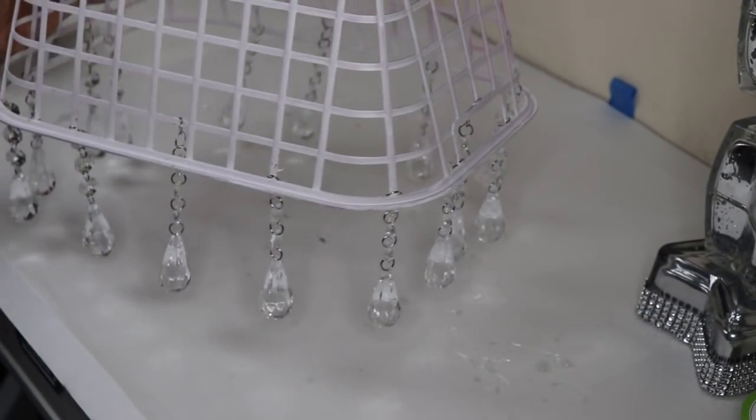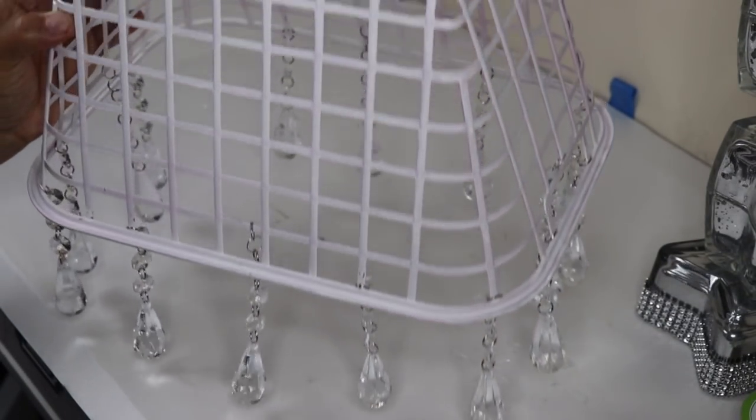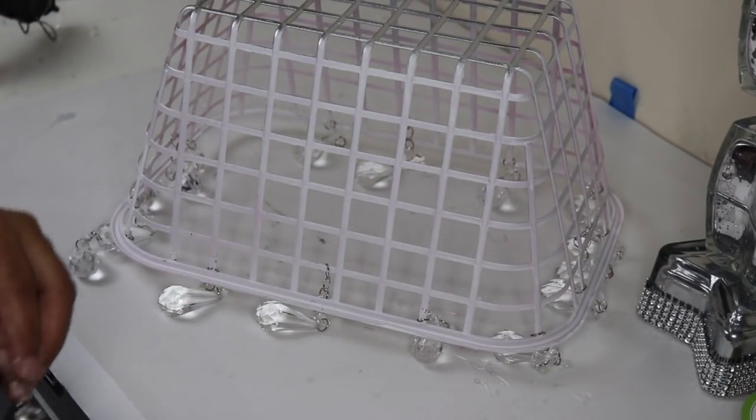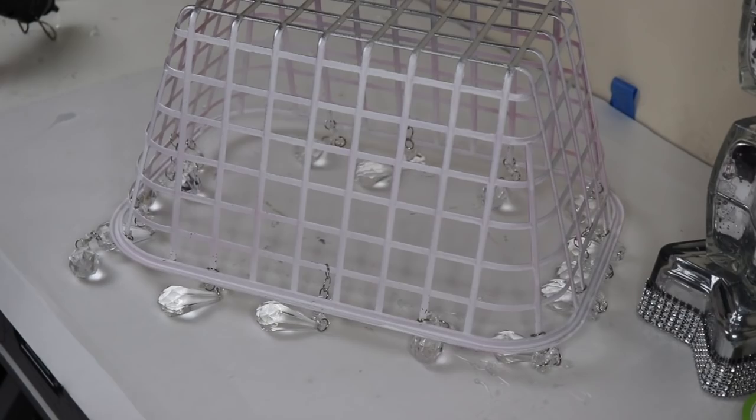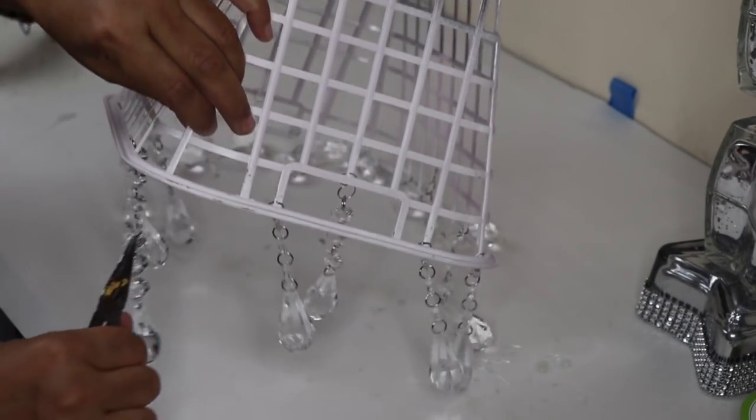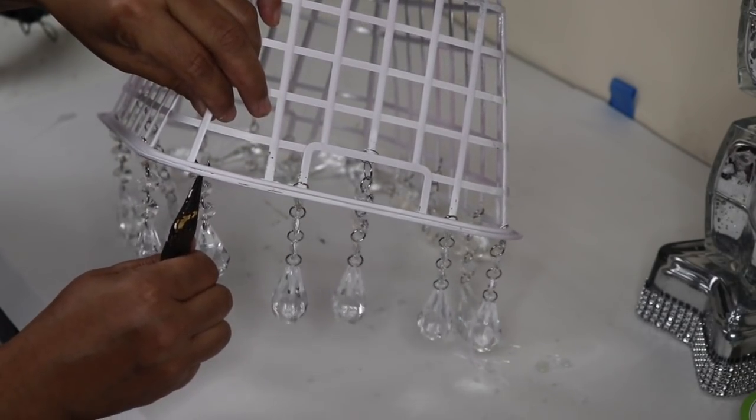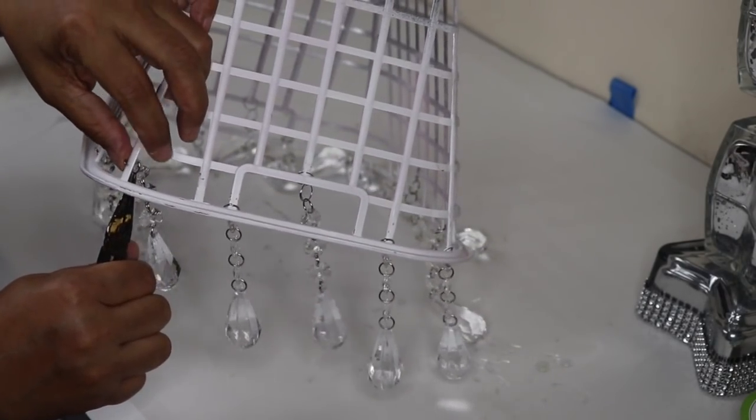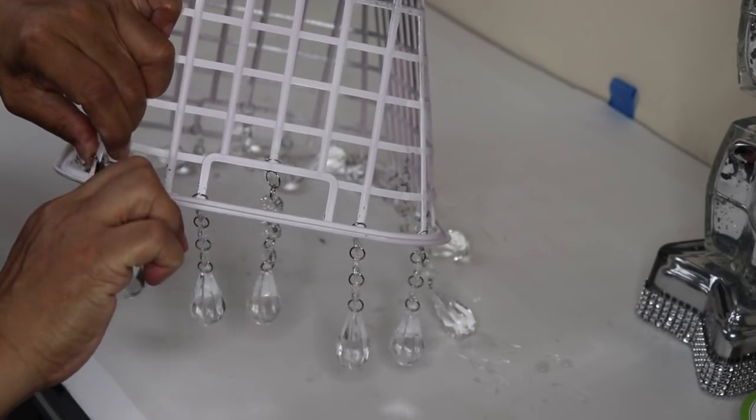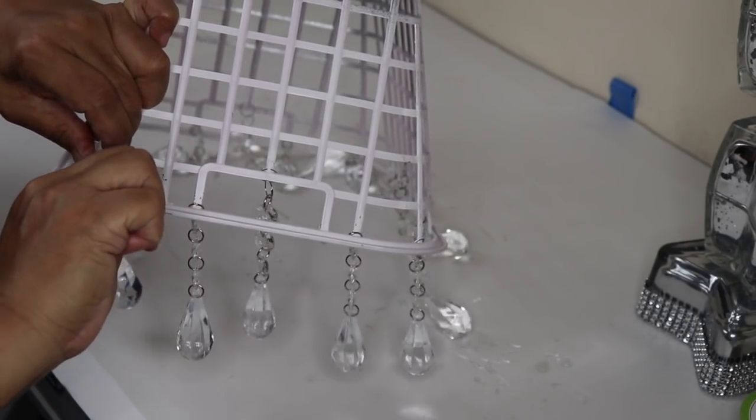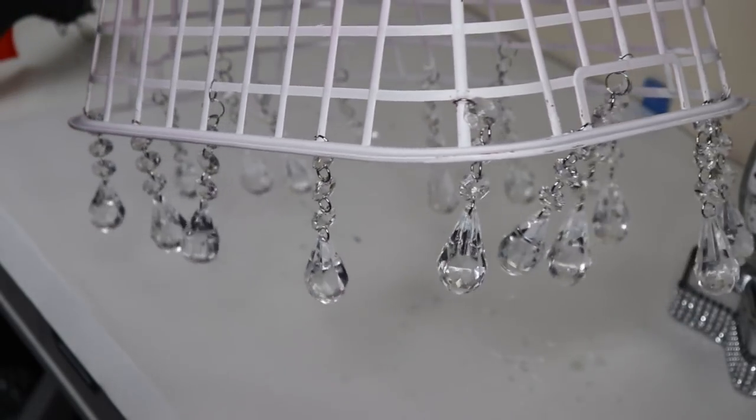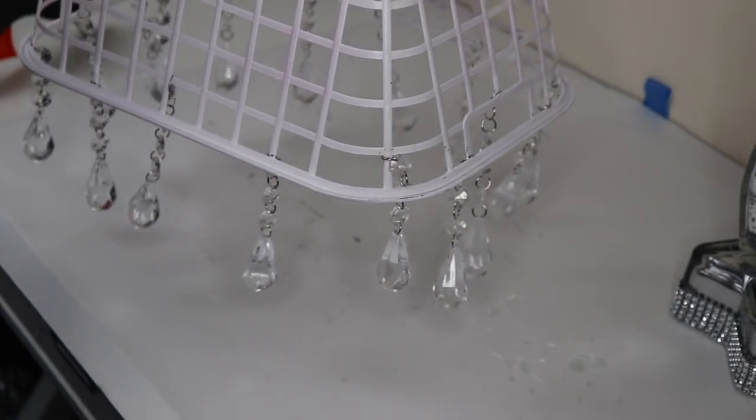Once my basket was dry I decided to add some chandelier pendants to it off camera and I painted the top of the grid silver and here's one last pendant that I'll attach to the basket on camera. Using my needle nose pliers I opened the jump ring so now I'll just attach it to the basket and then close the jump ring back. And here's what the basket looks like with all the pendants attached.